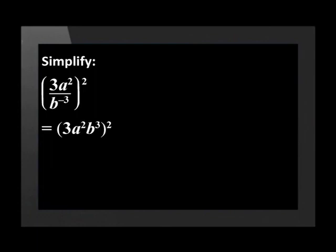Remember we can write 3 as 3 to the power of 1 and b to the power of negative 3 as b to the power of positive 3 by moving it to the numerator. Now we can use the law for raising a power to a power.